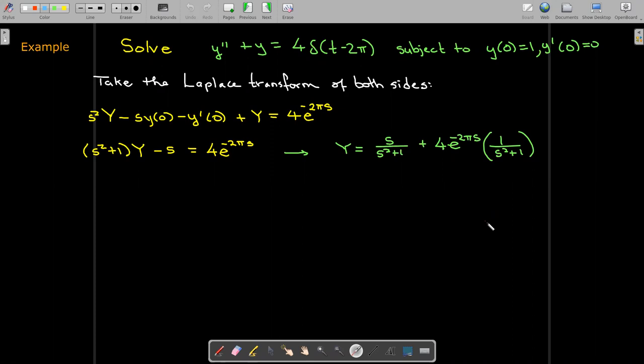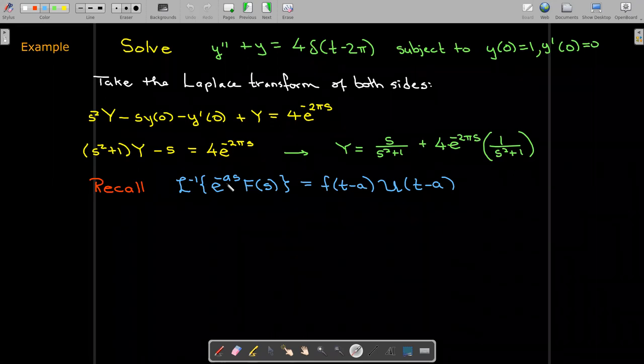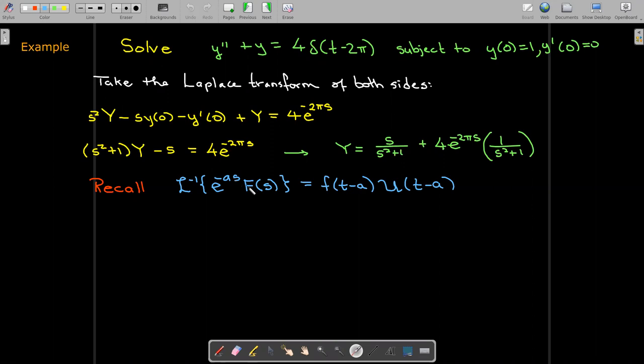And now we need to take the inverse Laplace transform. The inverse Laplace transform of the first term is simple. That's just going to be cosine of t. What about the second term? Well, we have to remember one of our properties of Laplace transform that if I want to take the inverse Laplace transform of e to the power of negative as times uppercase F of s, that's just going to be a function whose Laplace transform is f of s shifted to the value of a times our unit step function shifted at the value of a.